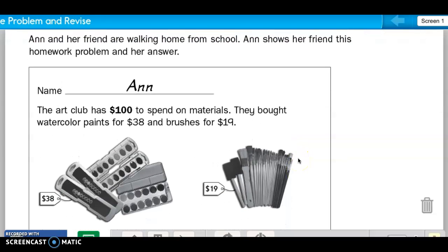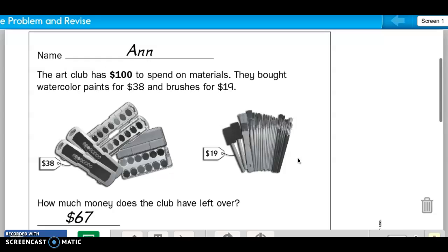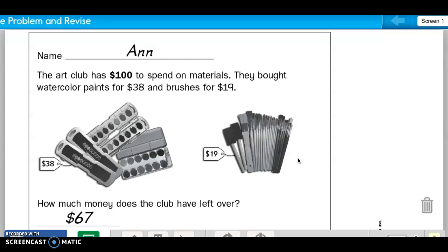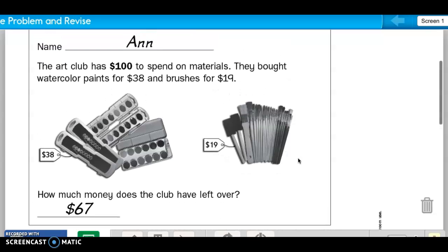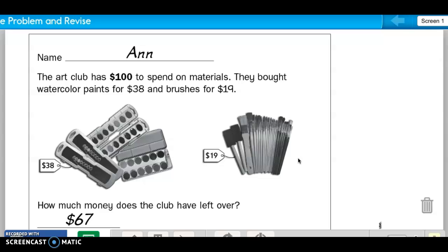Ann is her name on the paper. The art club has $100 to spend on materials. They bought watercolor paints for $38 and brushes for $19. How much money does the club have left over?